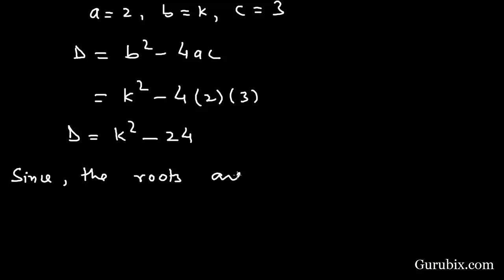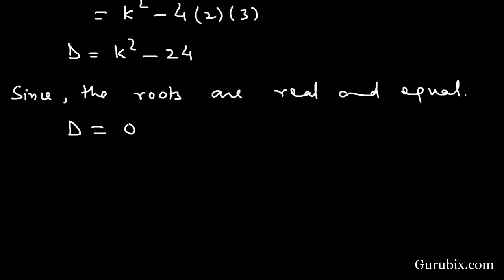This means k² - 24 = 0. This means k² = 24. This means k = ±2√6. So this is the solution of the question.